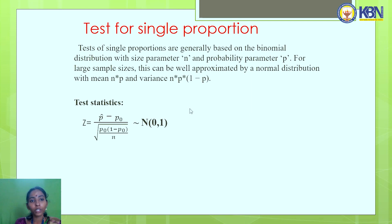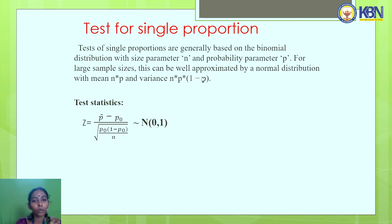Test for single proportion: This test is based on the binomial distribution with size parameter n and probability parameter p. For large sample sizes, the binomial is approximated by a normal distribution with mean np and variance npq, where q = 1 − p. The test statistic is Z = (p̂ − p₀) / √(p₀(1 − p₀)/n), which follows standard normal distribution.